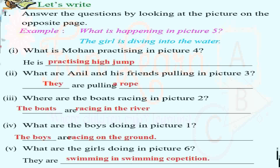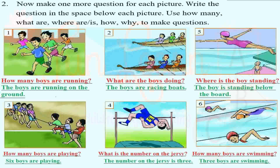Now make one more question for each picture and write the question in the space below each picture. Use question words: how many, what are, where are, is, how, why. For example: How many boys are running? Three boys are running on the ground.